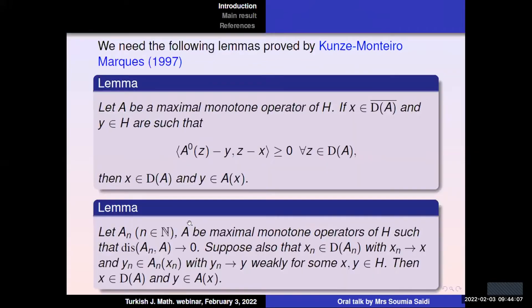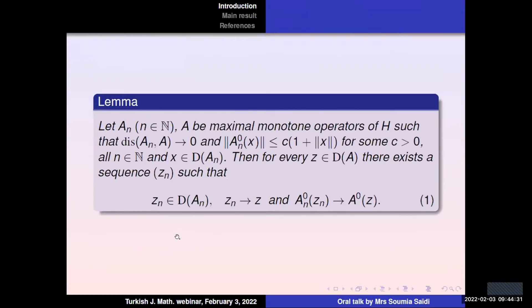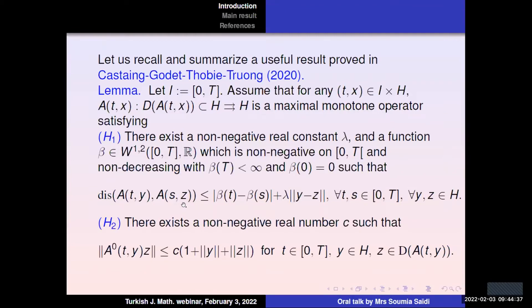We need the following lemmas proved by Kunze and Monteiro Marques in 1997. These lemmas involve the elements of minimum norm of maximal monotone operators and also different modes of convergence. Also the pseudo-distance between maximal monotone operators as follows. In our study, we need also the following lemma proved in the paper recently published by these authors.